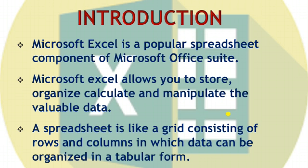A spreadsheet is like a grid consisting of rows and columns. A spreadsheet is a sheet that contains columns and rows. Where the columns and rows coincide, that is called a cell, which is in a tabular form. Tabular form means it is in the form of a table — small cells are there, and in those cells we write our data.